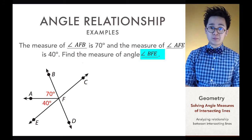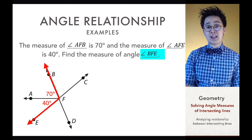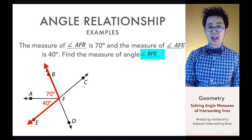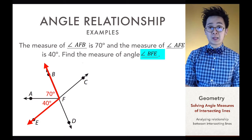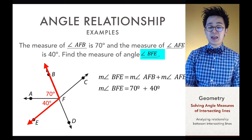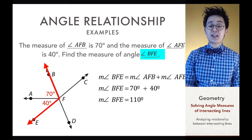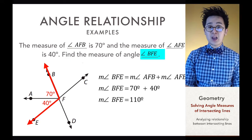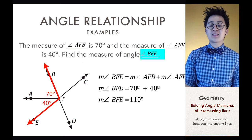We're looking for the measurement of angle BFE — the angle formed by connecting B, F, and E. Mathematically, all we need to do is add the two given angles. So the measurement of angle AFB plus the measurement of angle AFE — 70 degrees plus 40 degrees — equals 110 degrees. That is the measurement of angle BFE.